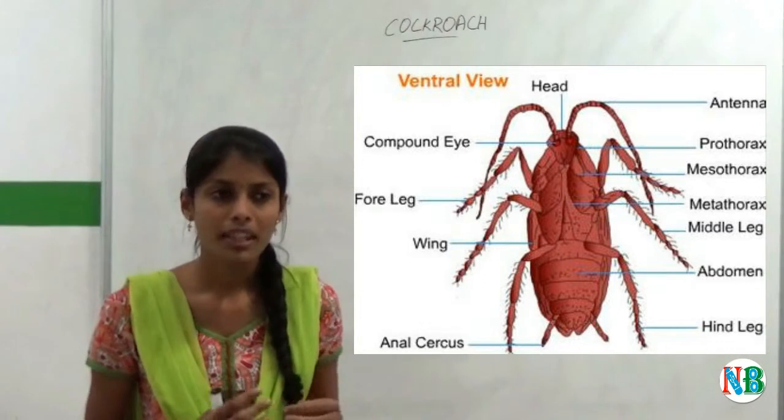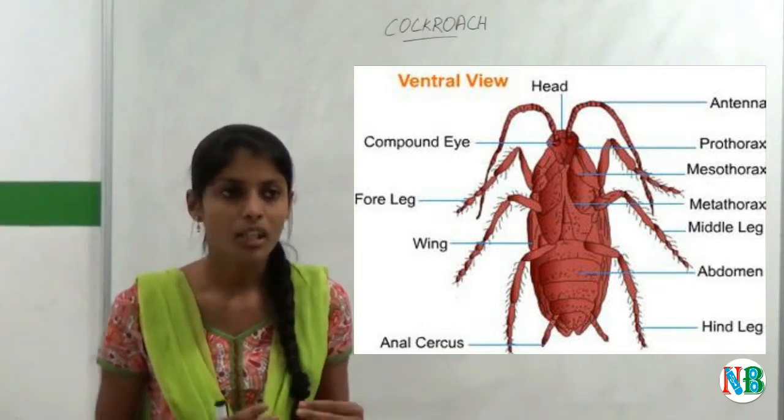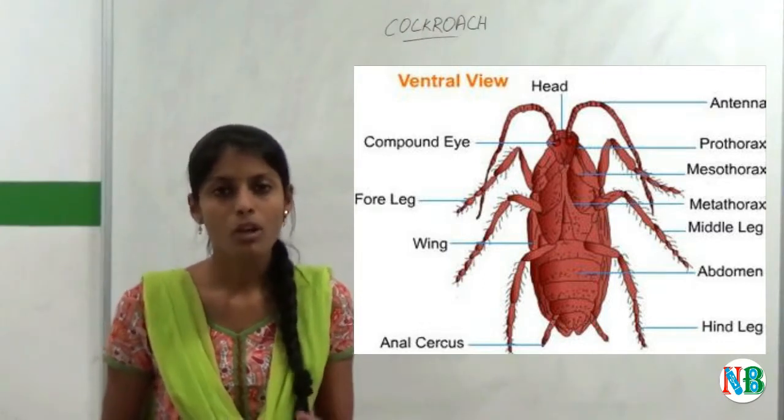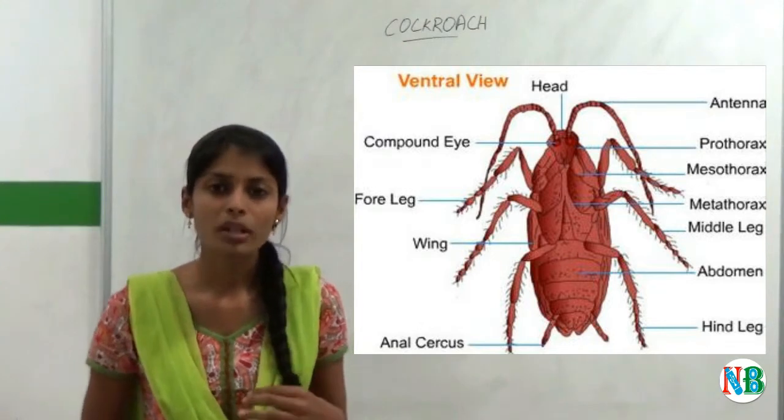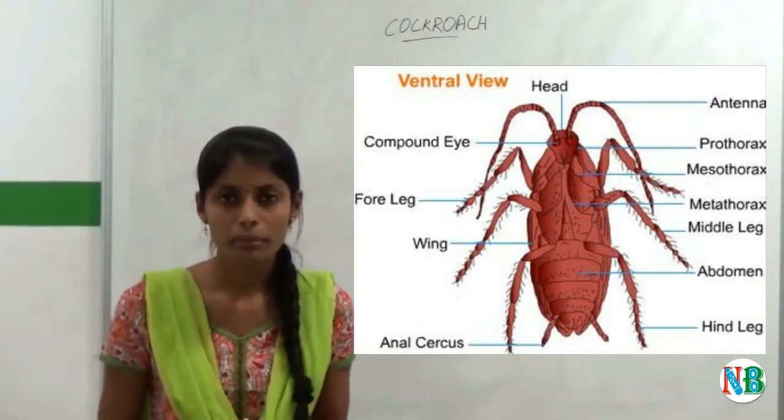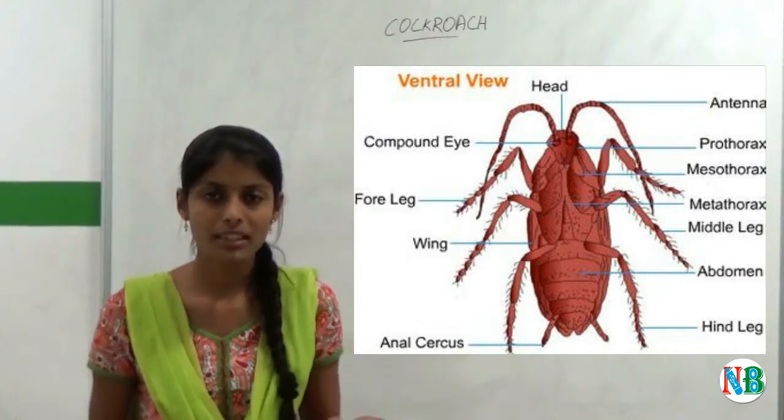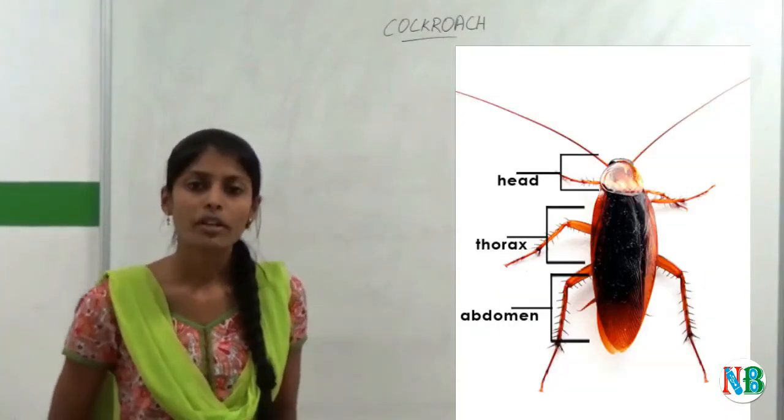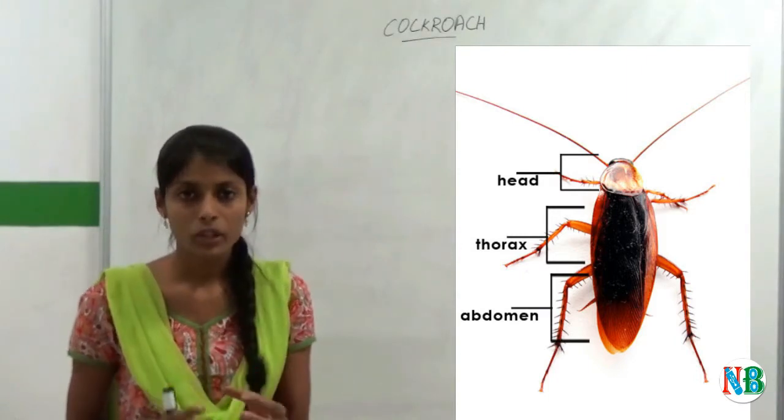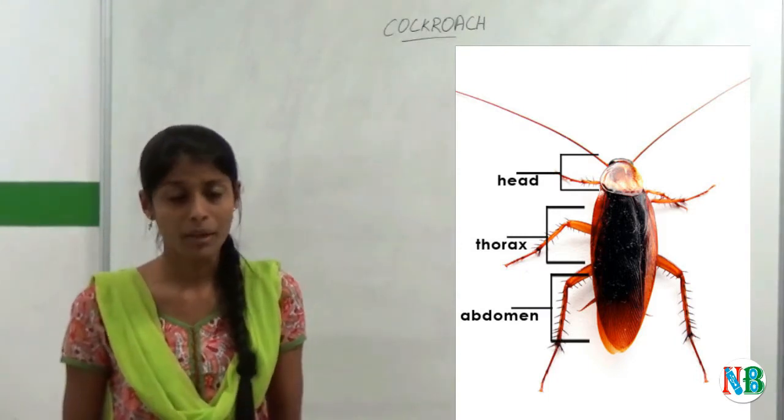In hindwing, there are some modifications that happen in order to carry out jumping and hopping activities. Based on the location of forewing, middle and hindwing, they are termed as prothoracic, mesothoracic and metathoracic. As I already told you, cockroach is divided into head, thorax and abdomen.